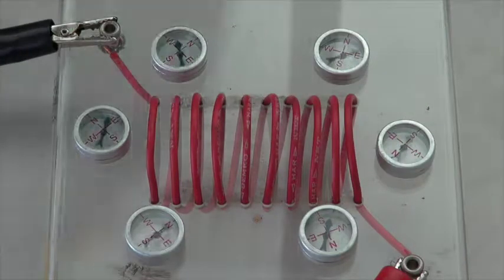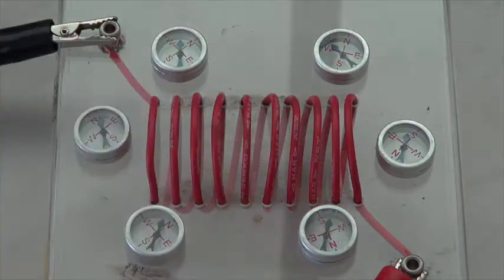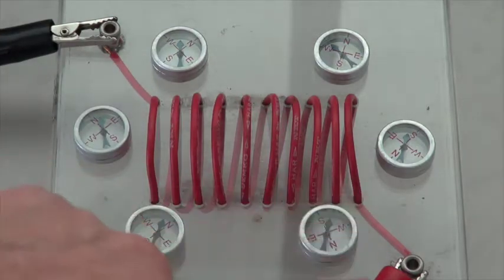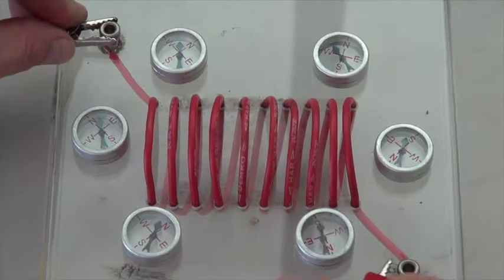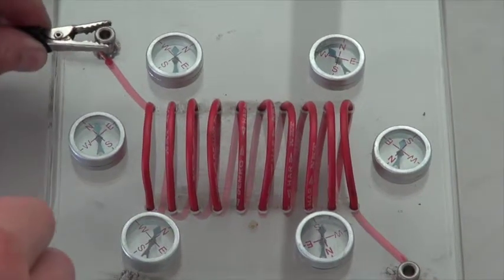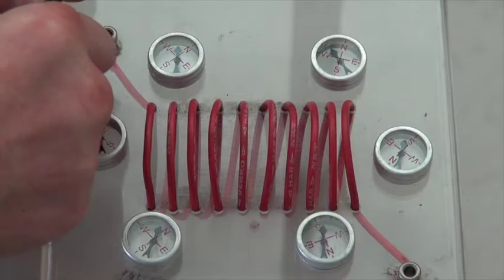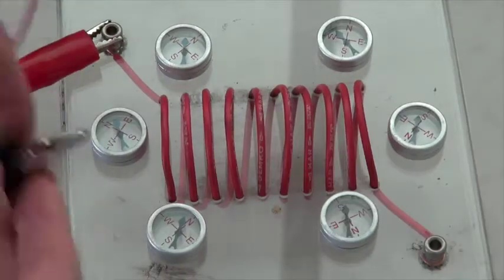Okay, so what happens now if I change the flow of the current? So what I'm going to do is change the terminals flowing through the solenoid. Notice that my compass needles have gone back to their original position. Remember with a solenoid or a magnet it always flows from north to south.